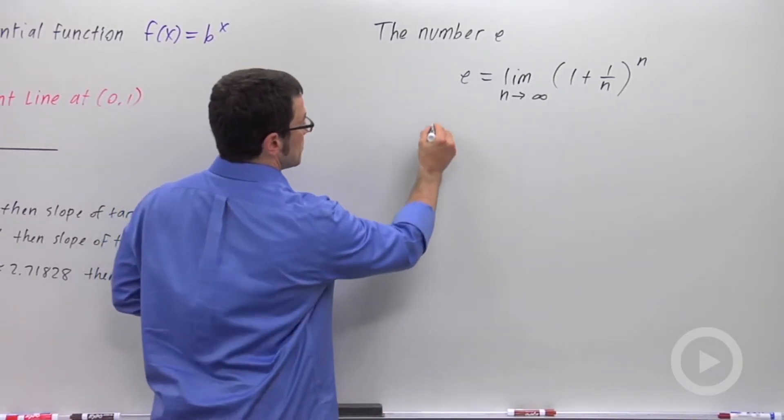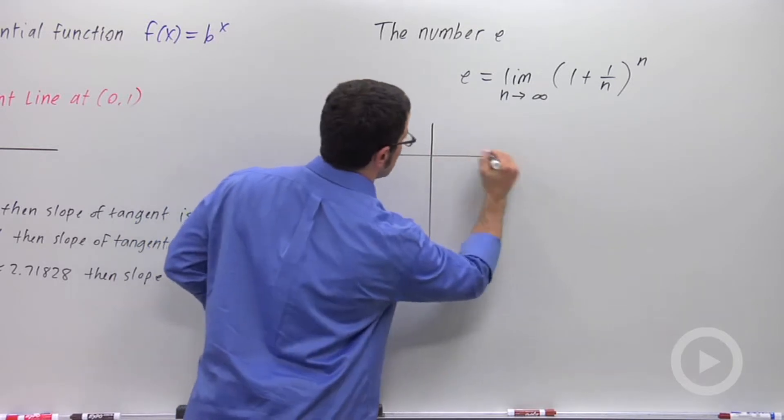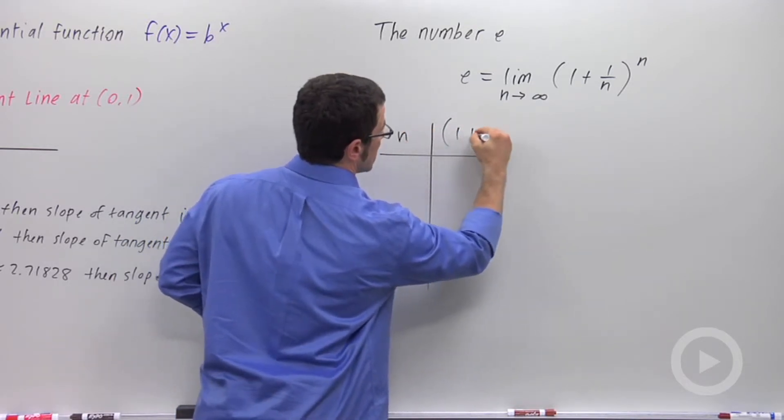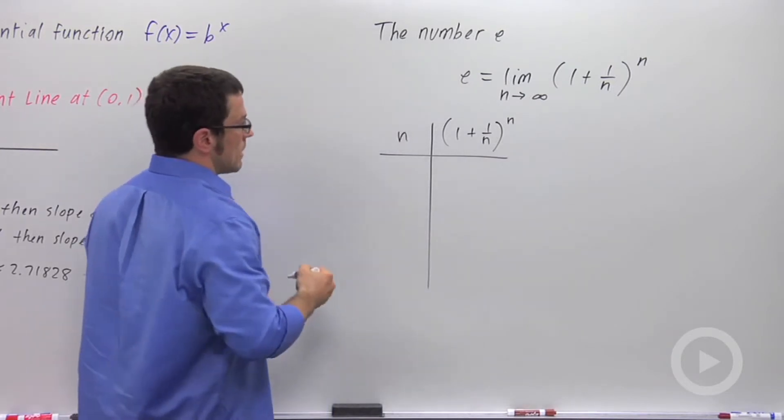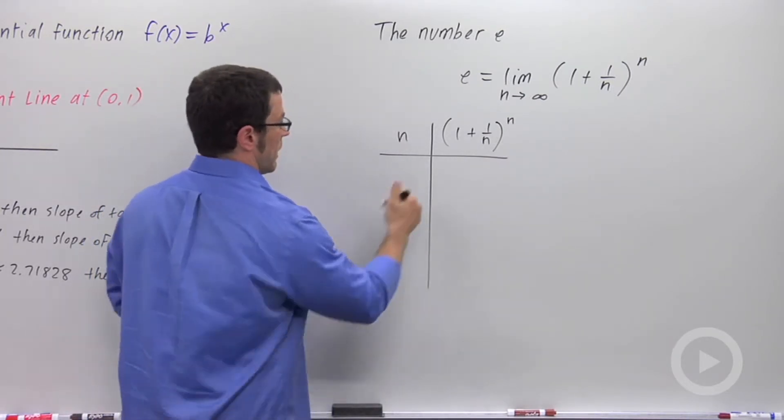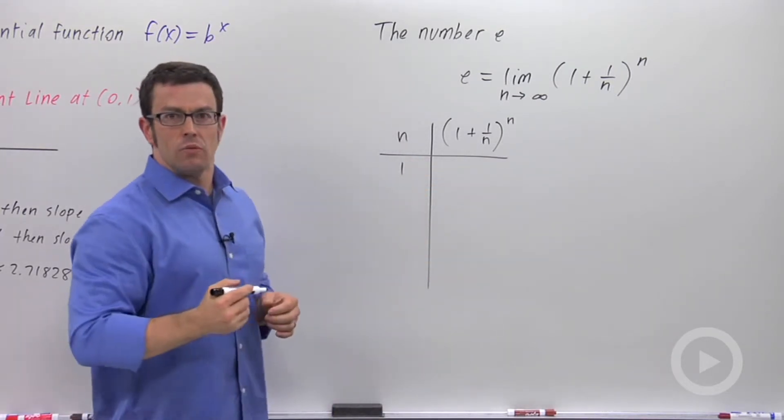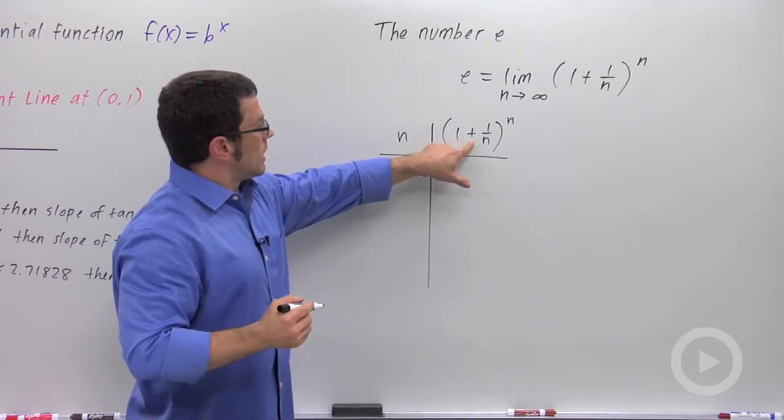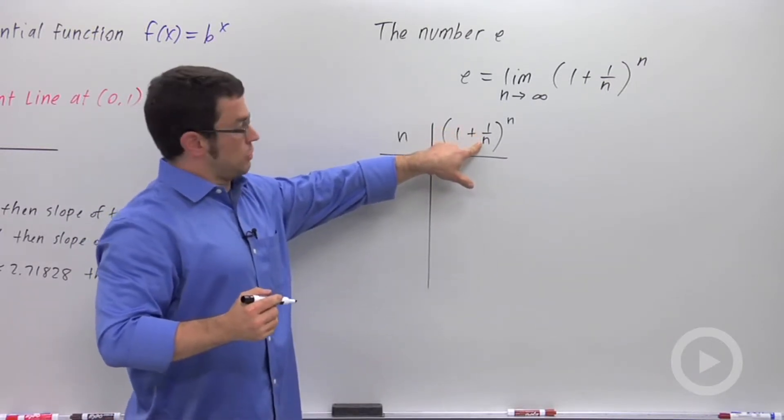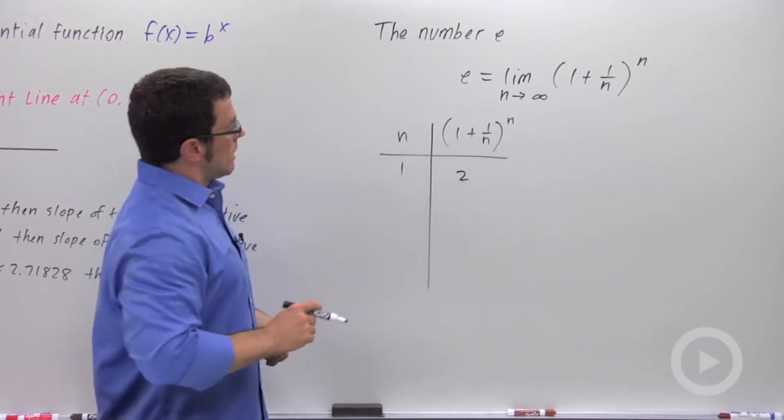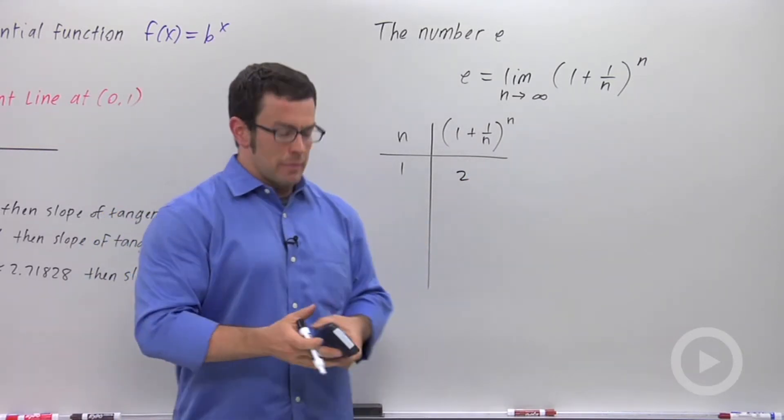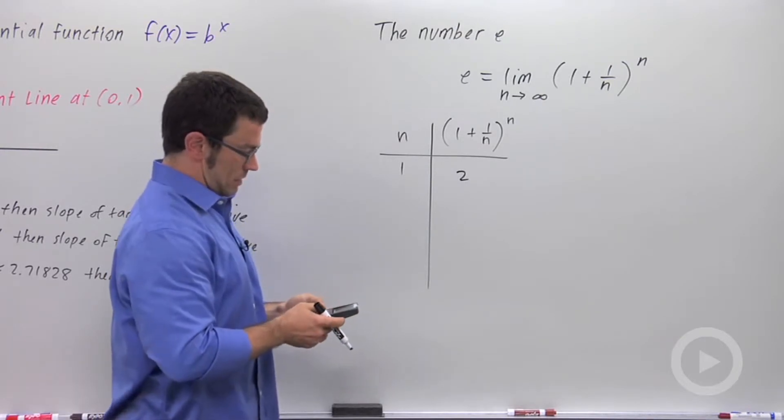So I'll make a little table. Let me start with the value 1. When n equals 1, I get 1 plus 1 over 1, which is 2, to the 1. So I get 2. And anything past that, I'm going to need my calculator. So let me do this.